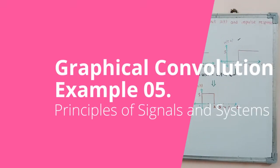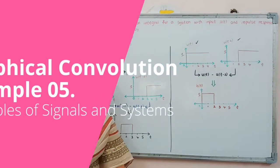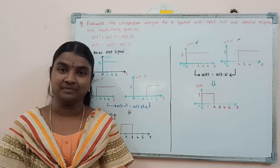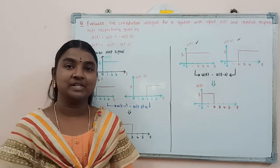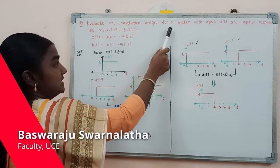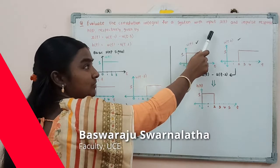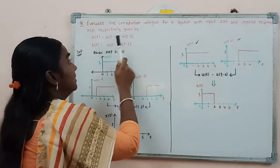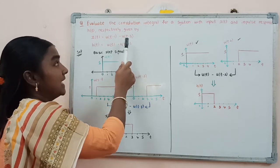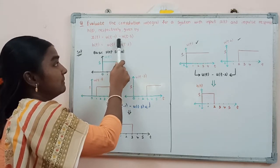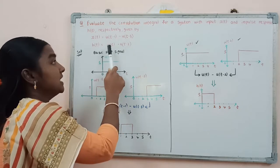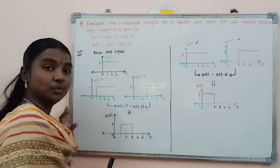Hello everyone. In this video I am going to simplify one question based on graphical convolution. Here is the question: evaluate the convolution integral for a system with input x(t) and impulse response h(t), given by x(t) = u(t-1) - u(t-3) and h(t) = u(t) - u(t-2).